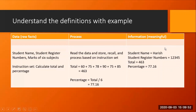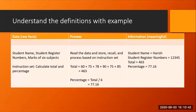This information provides meaningful output based upon the data we had. The data — name, register number, and six subject marks — were all raw facts. We gave certain instructions to calculate total and then percentage. That total and percentage we are getting as meaningful information. This is how we can correlate the definitions and all terminologies with respect to the example. I hope this explanation is understood. If you have any doubts, put them in the comments on the YouTube video — I will definitely get in touch with you in clearing the doubts. Thank you, students.